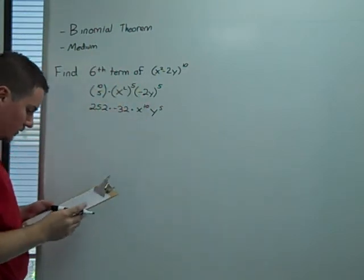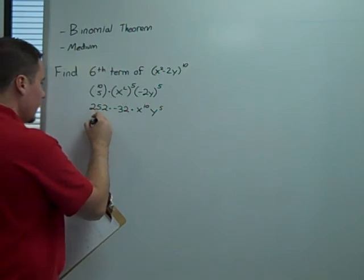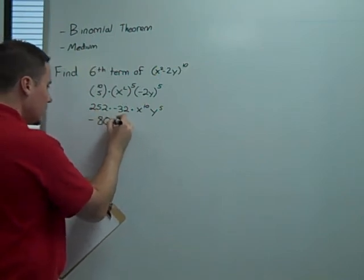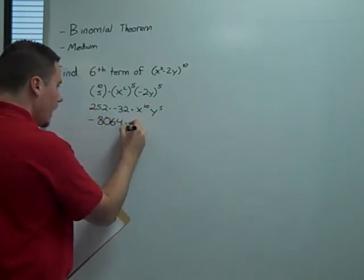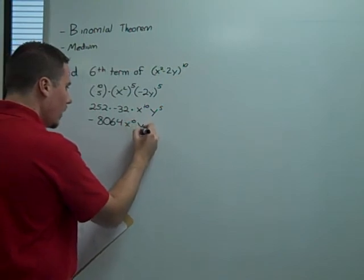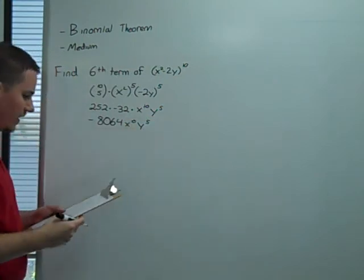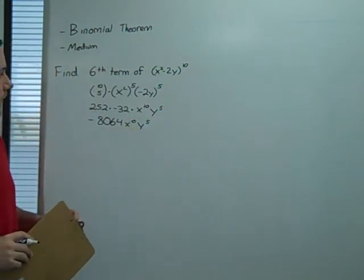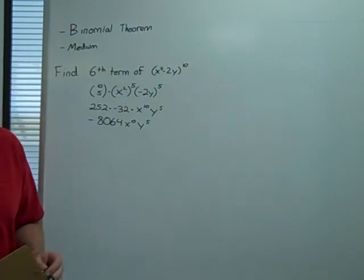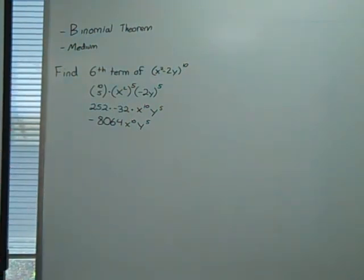So, all we have to do is multiply these in our calculator and get negative 8,064, x to the tenth, y to the fifth. And that is the sixth term of x squared minus 2y to the tenth.